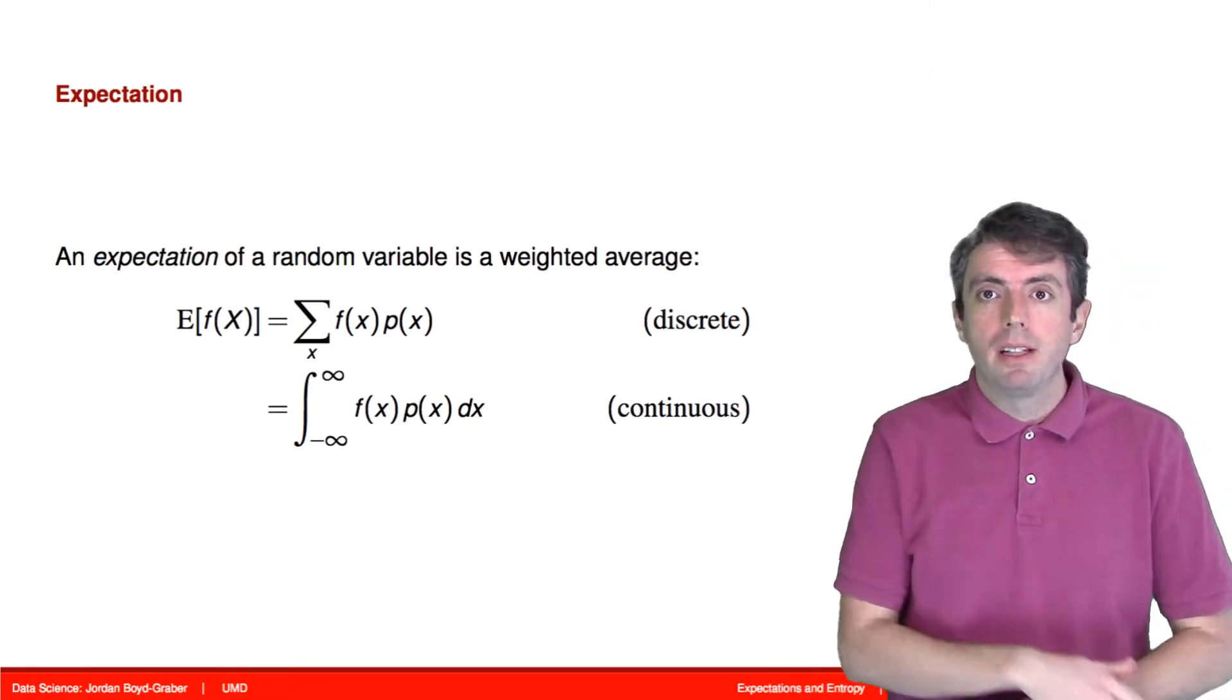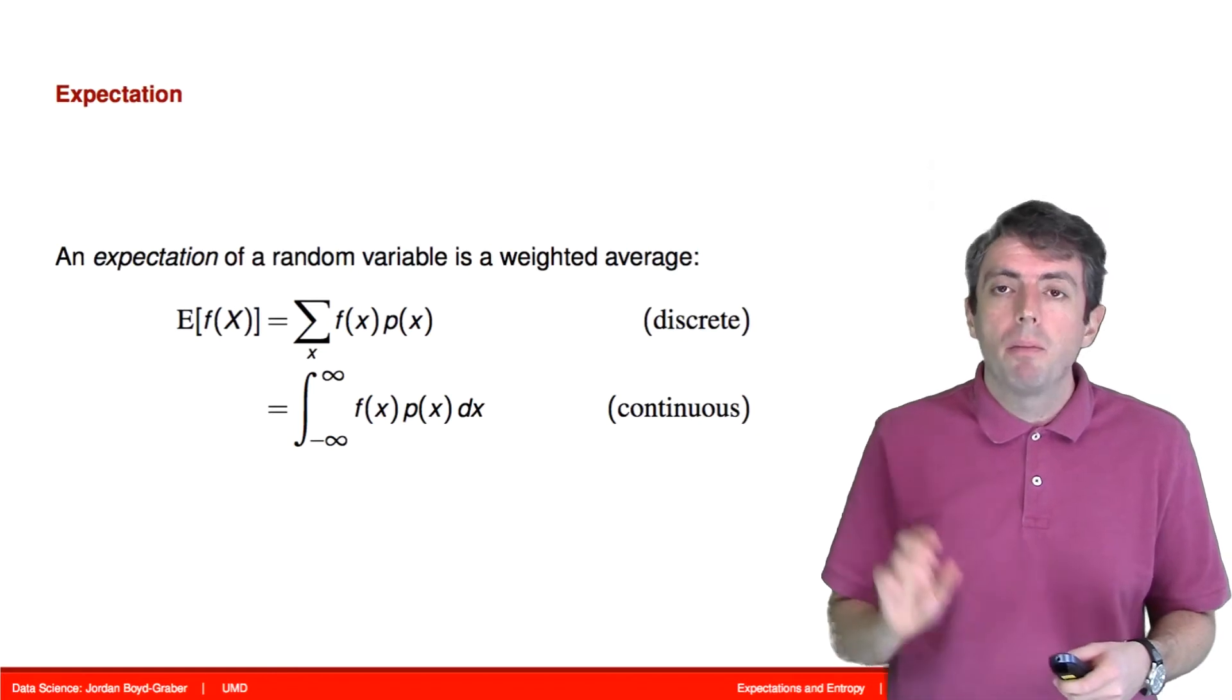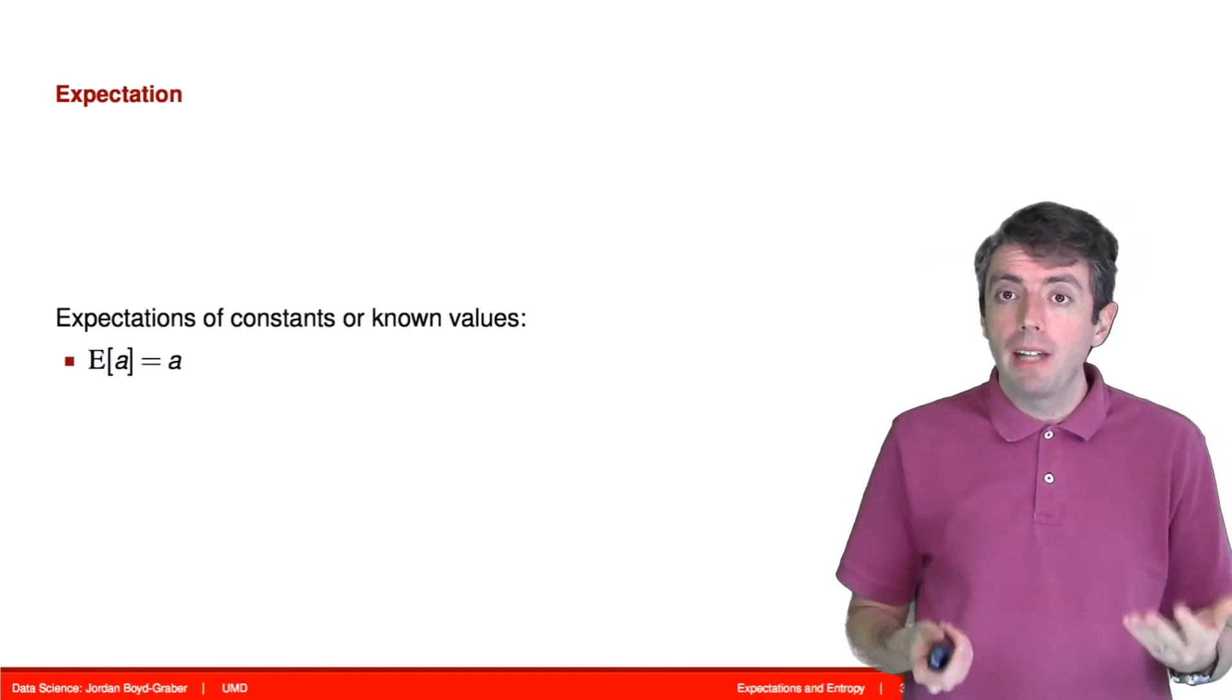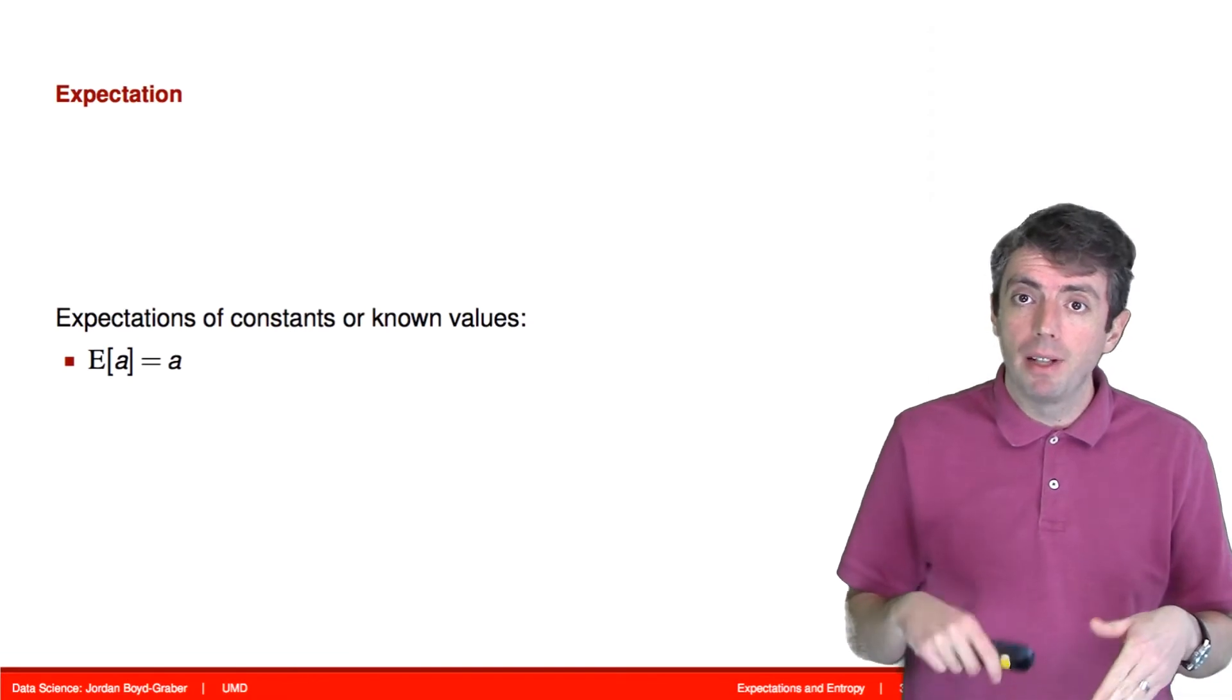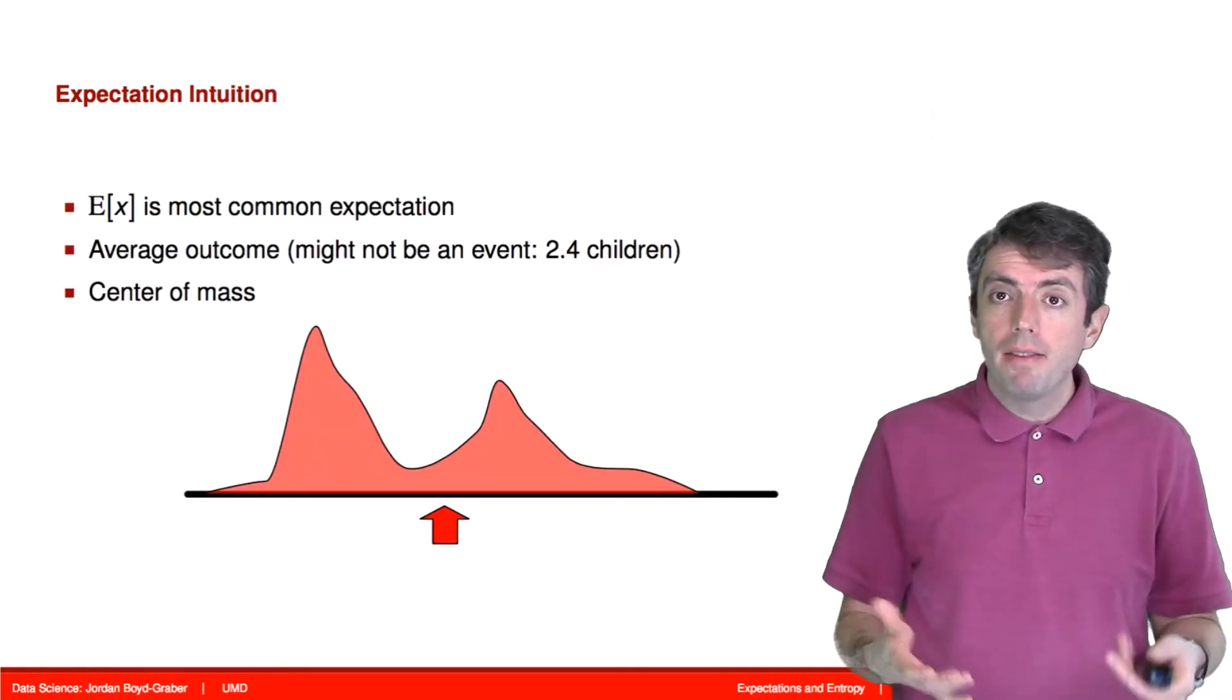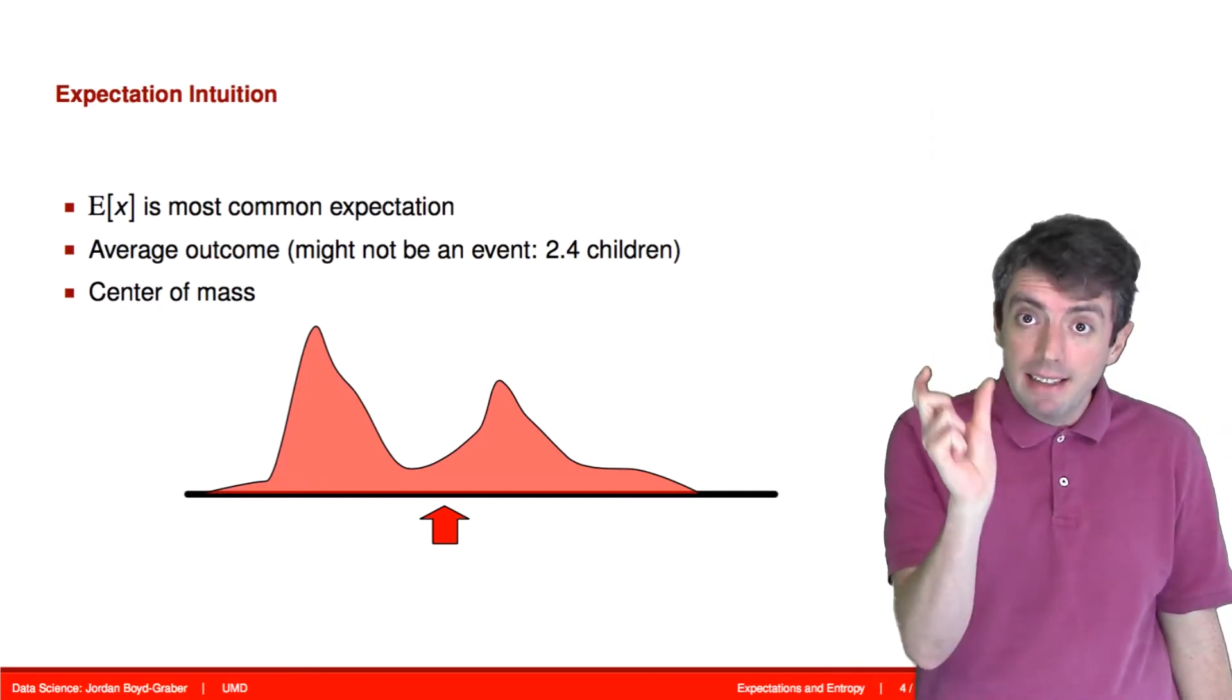This notation may be a little bit intimidating, we'll break it down into a concrete example in a bit. But before we do, let's think about what happens if we take the expectation of something that isn't a random variable. If we take the expectation of a constant a with respect to a random variable x, or whatever random variable, we're just going to get the same constant back out.